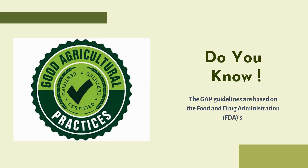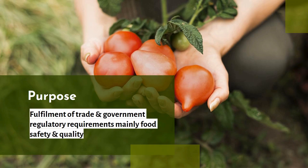One food fact for you is that the GAP guidelines are based on the Food and Drug Administration, i.e. FDA. Now, what is the purpose of GAP? The main purpose is to fulfill the trade and government regulatory requirements which are mainly for food safety and quality. You can understand it like this: it gives you a path to export your vegetables globally and ensure that the food is safe for consumers.